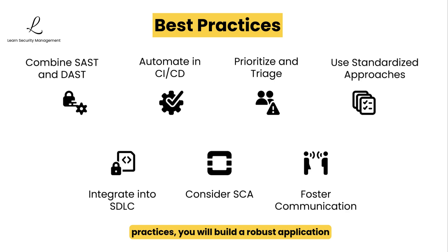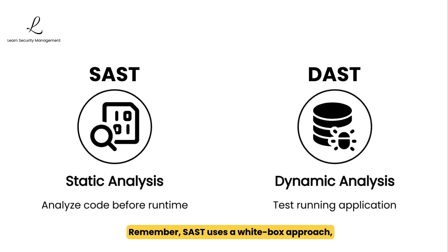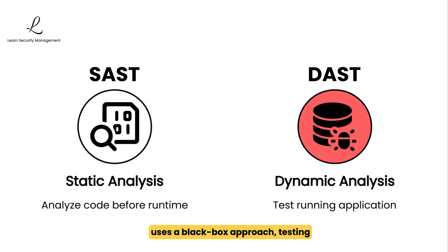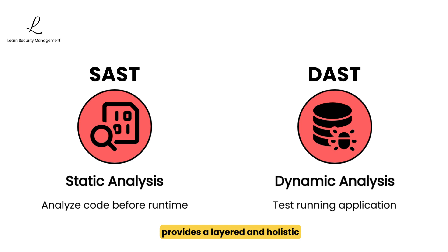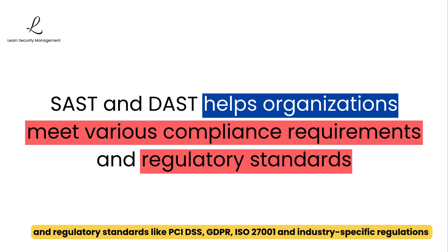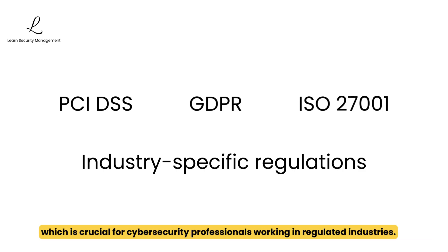By implementing these best practices, you will build a robust application security posture that addresses both code-level and runtime vulnerabilities throughout the development lifecycle. Remember, SAST uses a white-box approach analyzing static source code or binaries for vulnerabilities before the application runs. DAST uses a black-box approach, testing the application in its running state by simulating attacks. Using both together provides a layered and holistic security posture. It's worth noting that implementing SAST and DAST helps organizations meet various compliance requirements and regulatory standards like PCI DSS, GDPR, ISO 27001, and industry-specific regulations, which is crucial for cybersecurity professionals working in regulated industries.